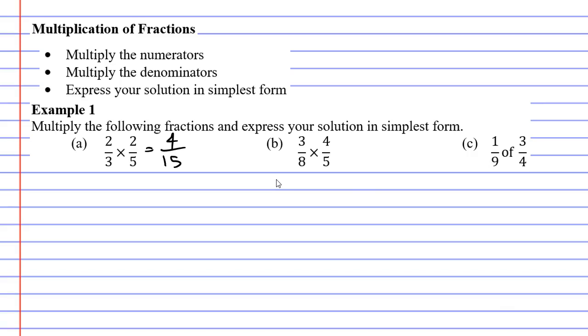Let's now move on to question B. Multiplying the numerators, 3 times 4 is 12, 8 times 5 is 40. This is one where we can simplify it. We could halve it. Half of 12 is 6, and half of 40 is 20.